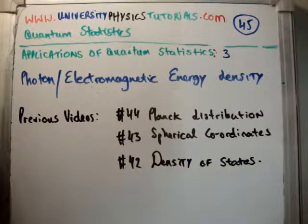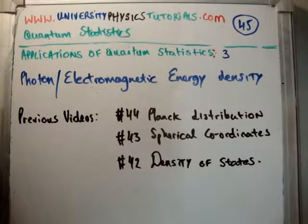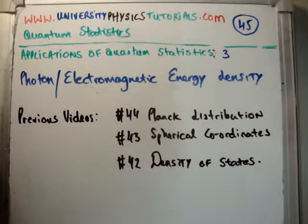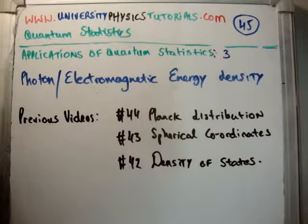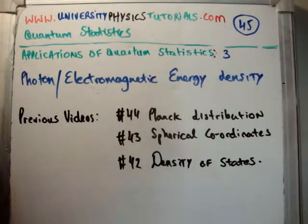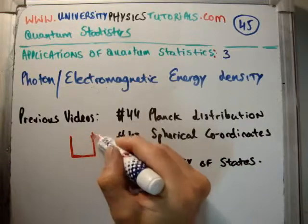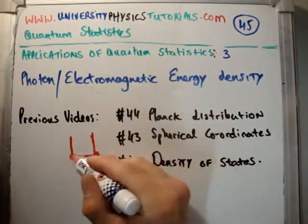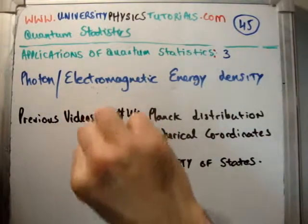In this video I'm going to continue on with my tutorials on quantum statistics. This is number 45, and this is a series of sub-videos on the application of quantum statistics — this one is number 3, and I'm going to talk about photon or electromagnetic energy density. The more important prerequisite videos are number 44 where I derived the Planck distribution, number 43 on moving from rectangular to spherical coordinates, and number 42 on the density of states in an infinite potential well where the wave function had to go to zero at the boundaries.